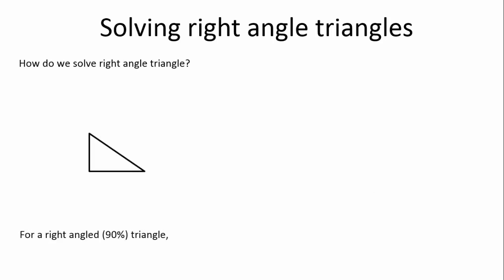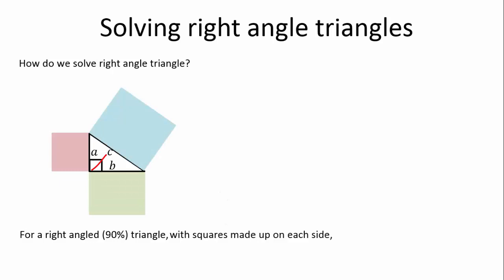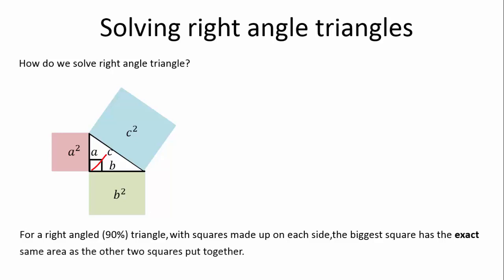We have our triangle. For a right-angled triangle, that's 90 degrees. We have our square, our A, B, and C. C is our hypotenuse — it is always the bigger side, and it's always opposite to the right angle. With squares made up on each side — A squared, B squared, and C squared — the biggest square has the exact same area as the other two squares put together. So A squared plus B squared is exactly equal to C squared.